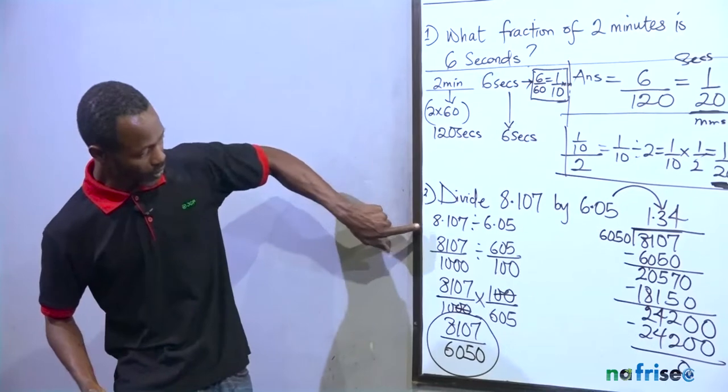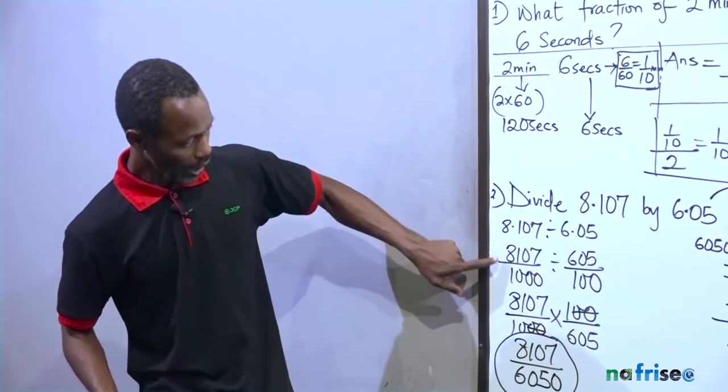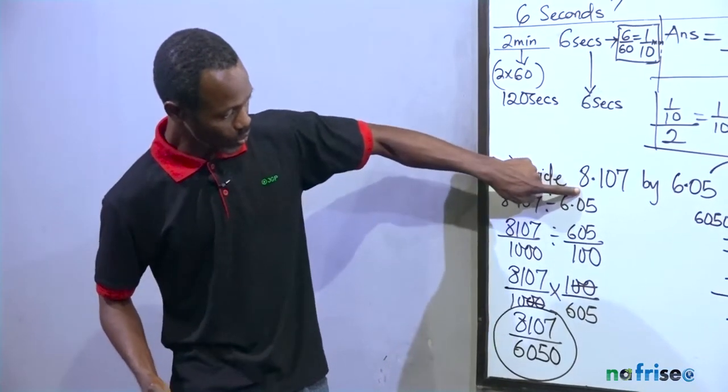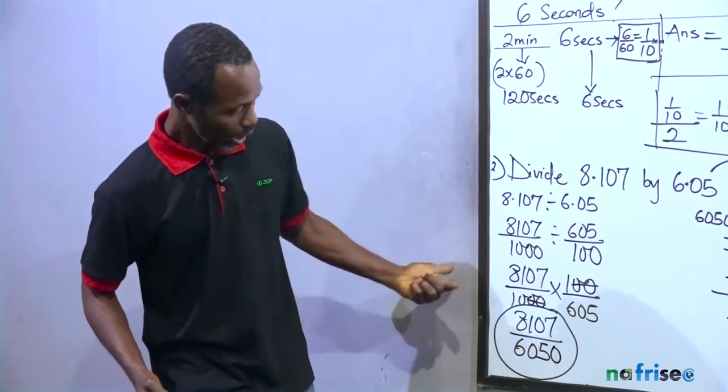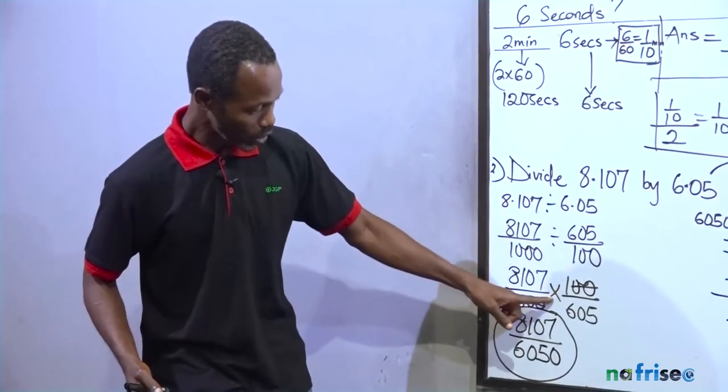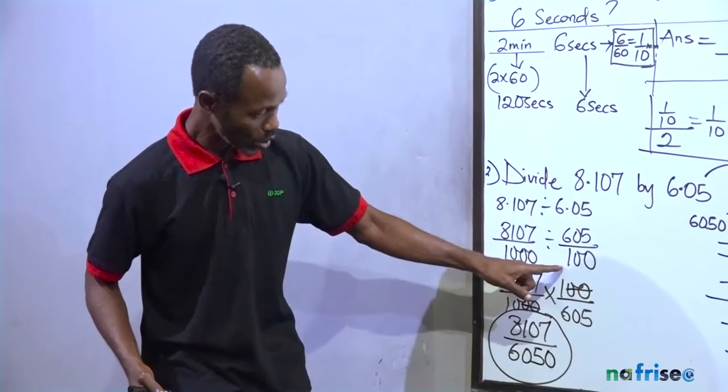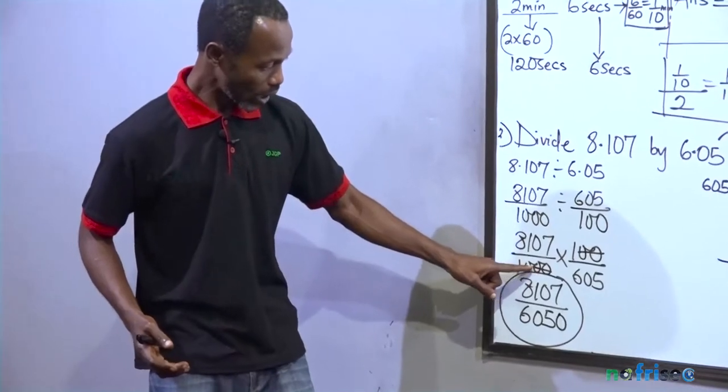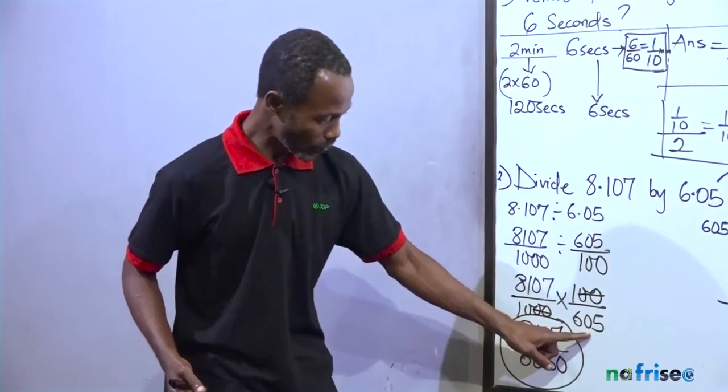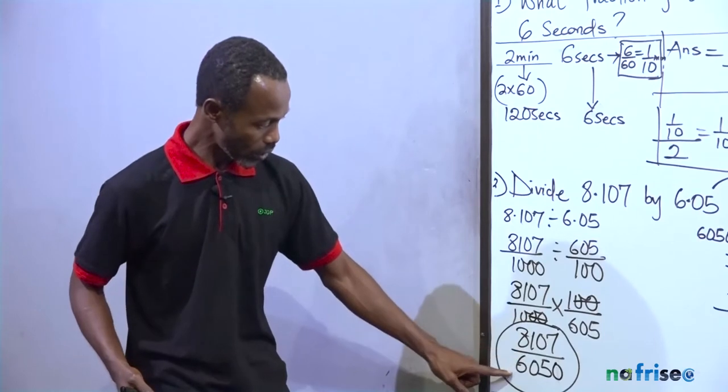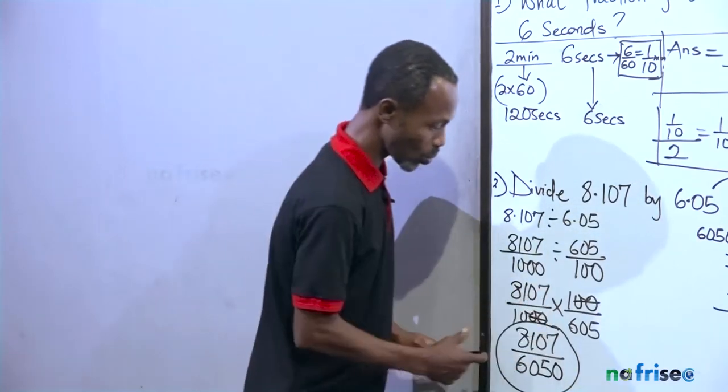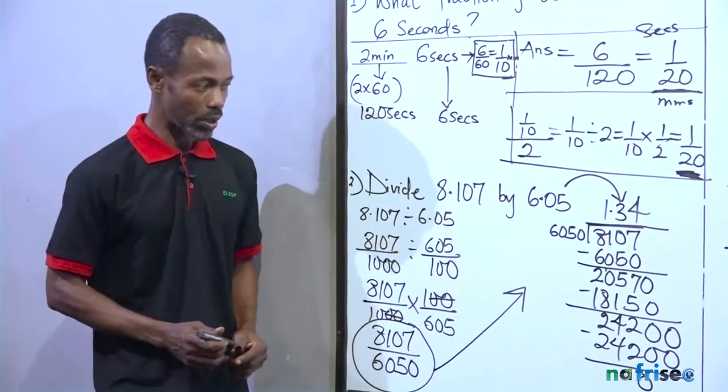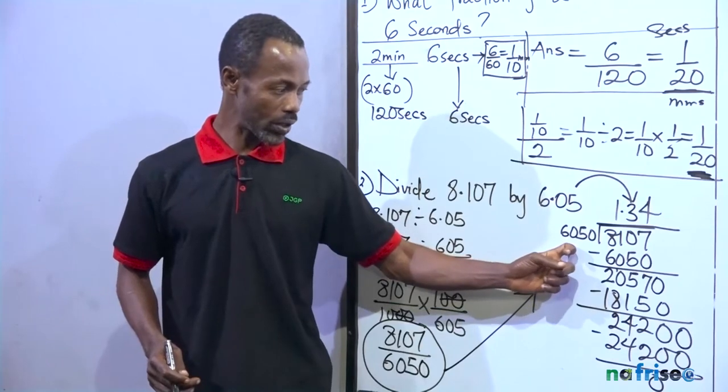if you see the question, you should be able to do something. Starting again, change the numbers. Since it's decimal, I change it to fraction. I turn this 8.107 to this. I turn this 6.05 to this. Now how do I solve this? To change this division sign, I multiply. To change the division sign to multiplication, 100 has to go up. 605 has to come down. So two zeros cancel these two zeros. And I use this 10 to multiply 605. That gave me 8,107 over 6,050. Then I took it straight to what? The long division.